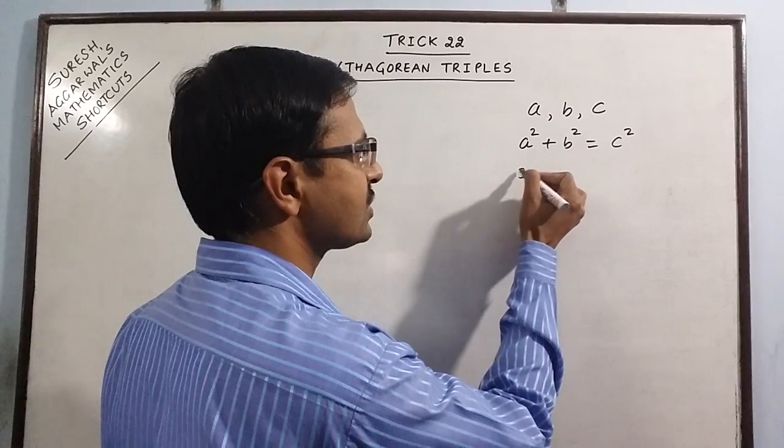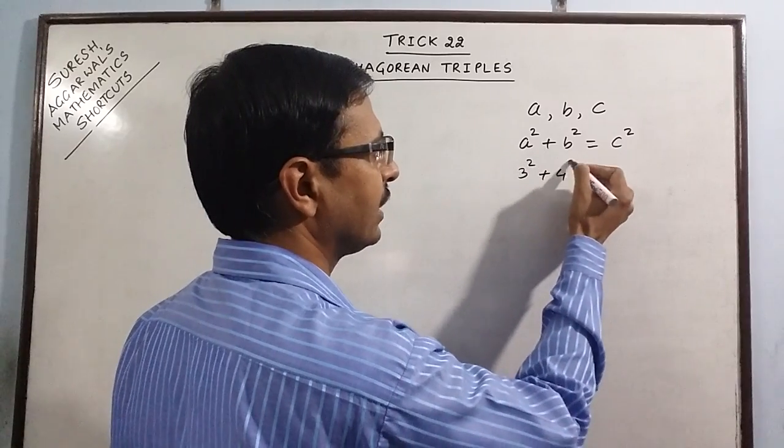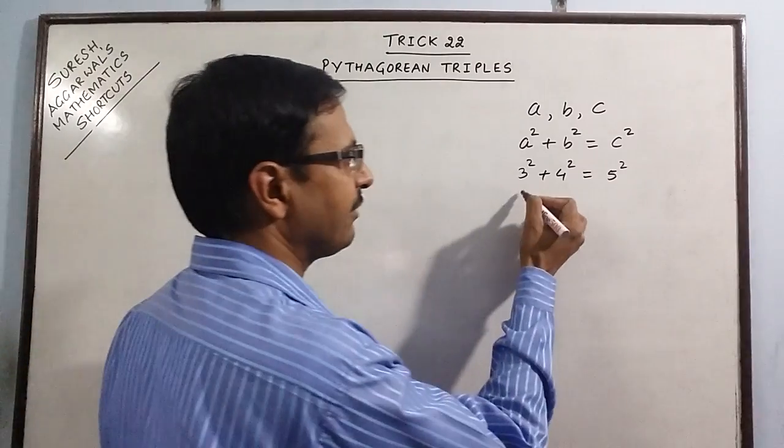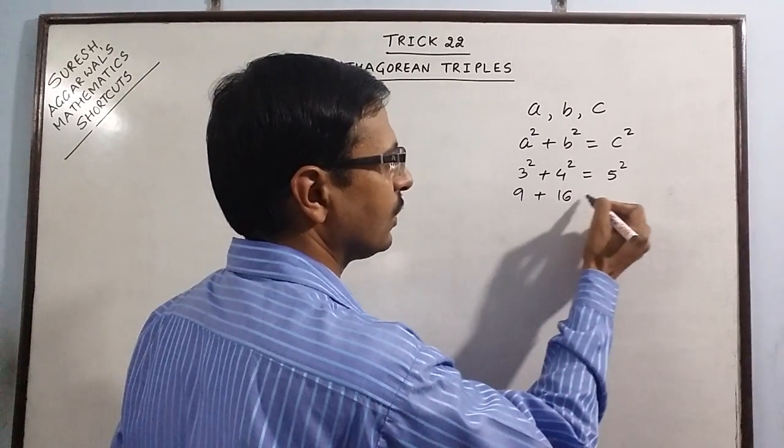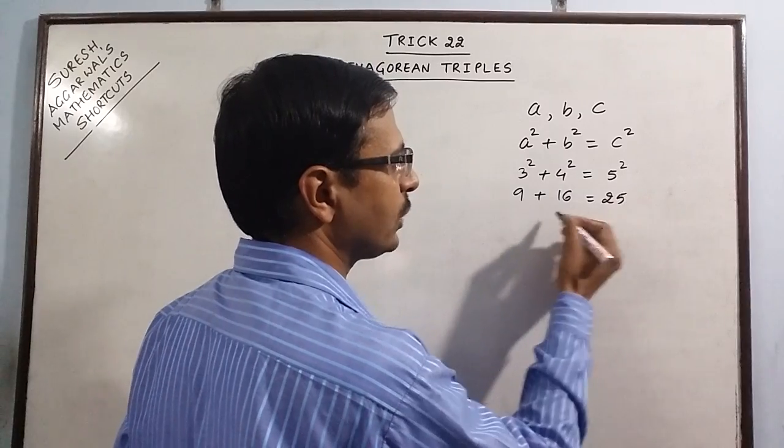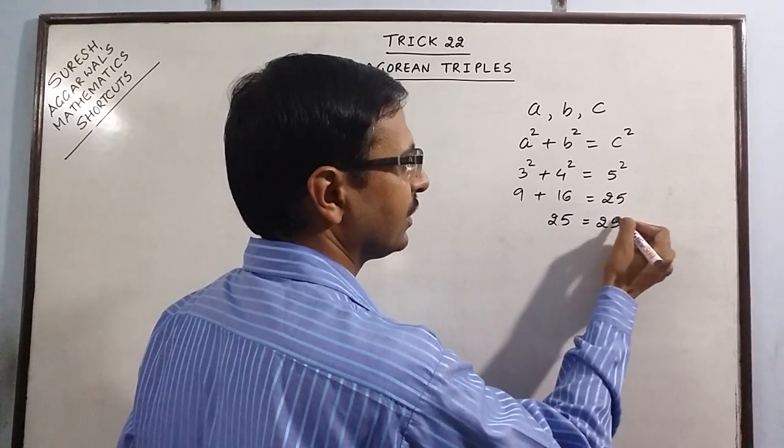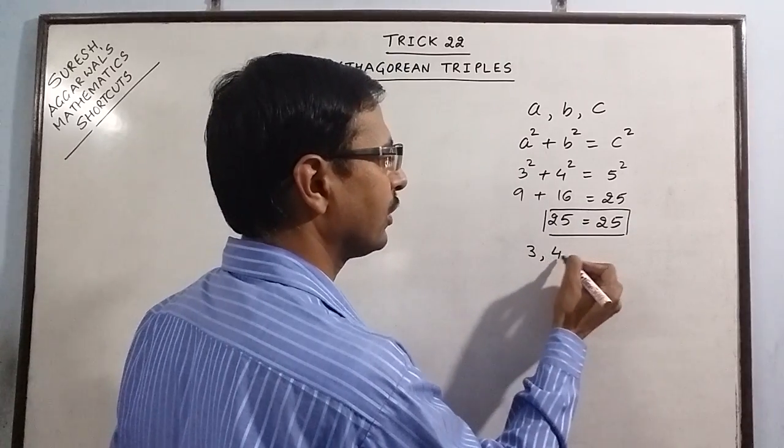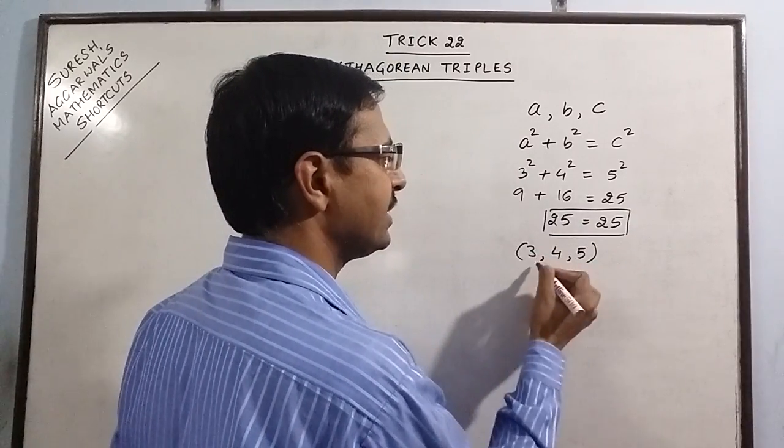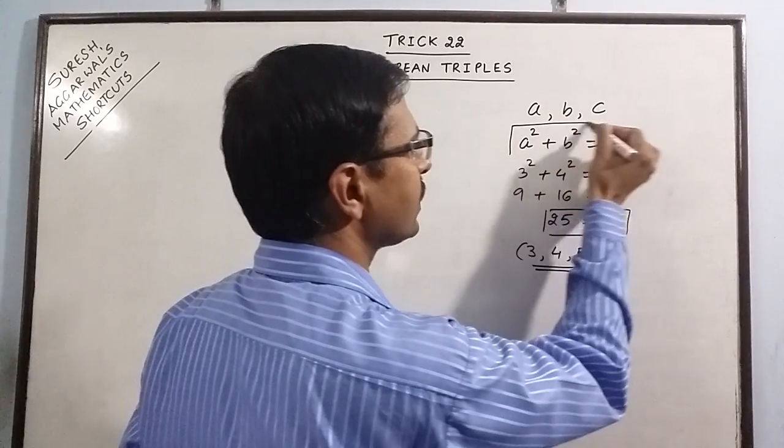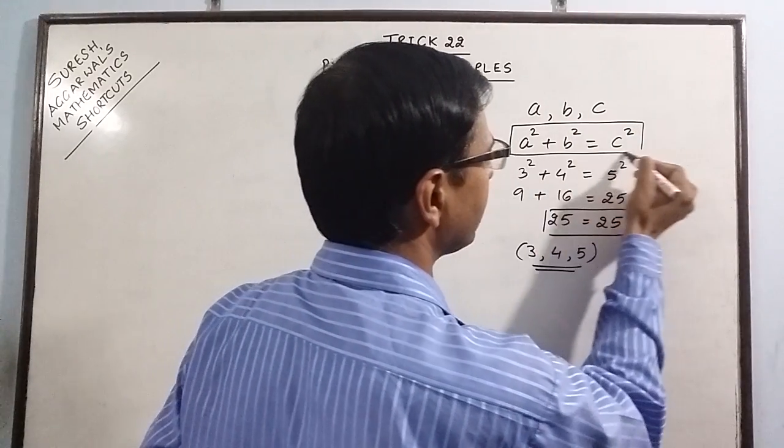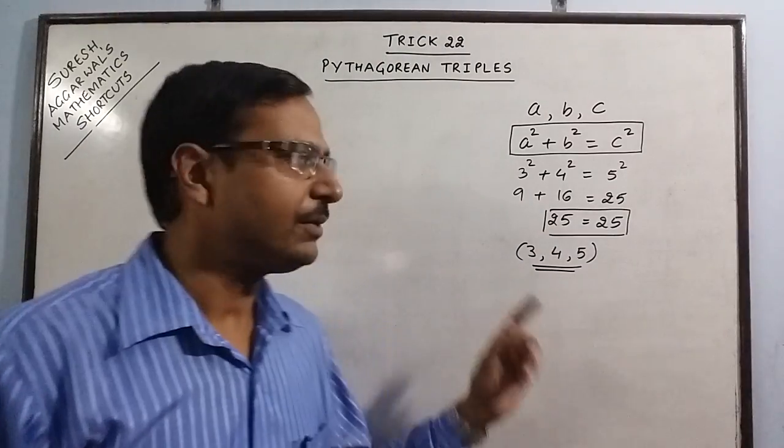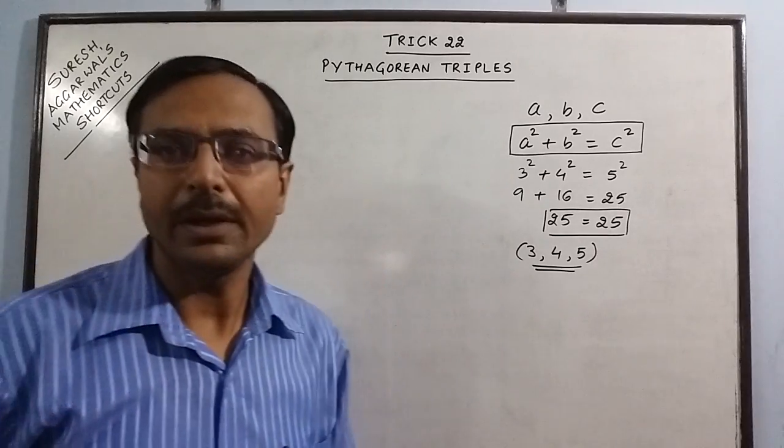For example, say we have 3 square plus 4 square equal to 5 square. This is the most basic Pythagorean triplet. We have 9 plus 16 equal to 25. So 25 equal to 25. So the triplet 3, 4, 5.